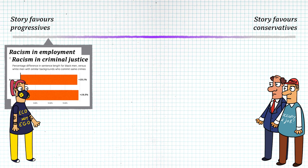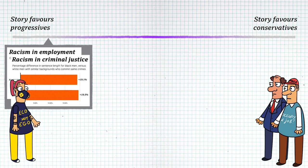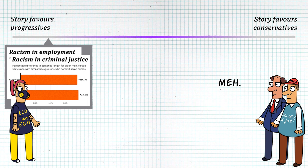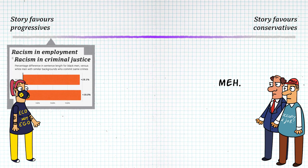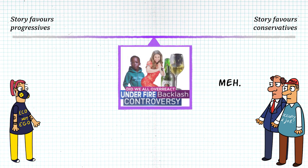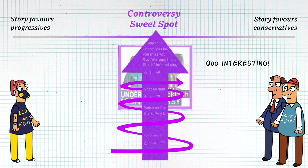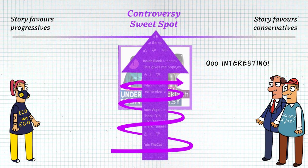And it's this dynamic that pushes so many unrepresentative stories to the top of the national conversation. The stories that best represent an issue, and that activists would most like everyone to pay attention to, don't engage the opposition, meaning no Toxoplasma of Rage and no attention. But the stories that are difficult or borderline give both sides something to argue over, and boosted by the Toxoplasma of Rage, they rise to the top of the conversation.